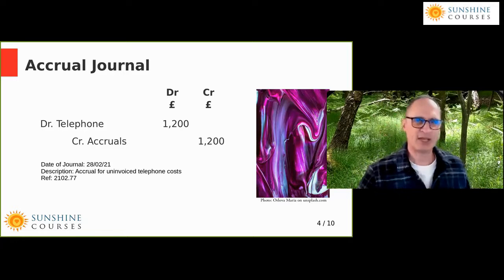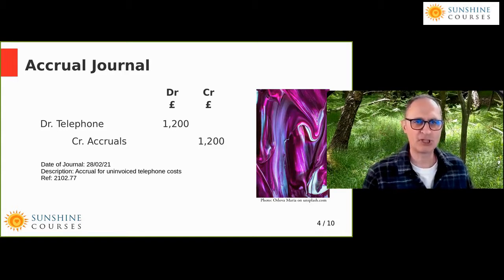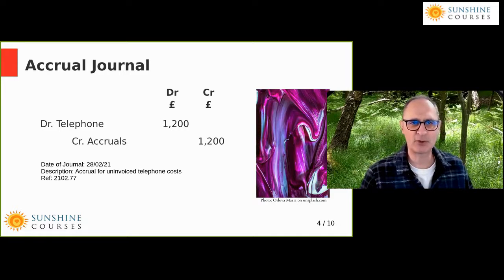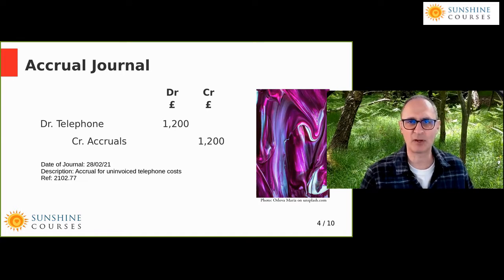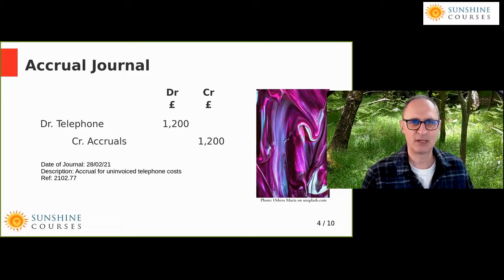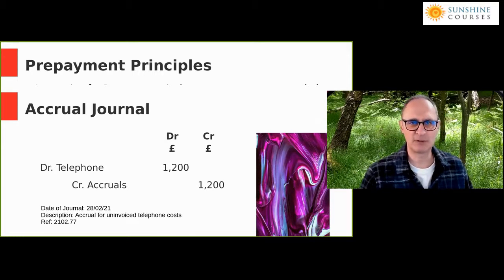To summarise accruals: the journal in February is debit telephone, credit accrual. In March we reverse that accrual and put through another accrual for any March expenses not yet accounted for. If we over or under-estimate, the accounting system naturally picks up the differences and accounts for them at the first period in which we can do so.